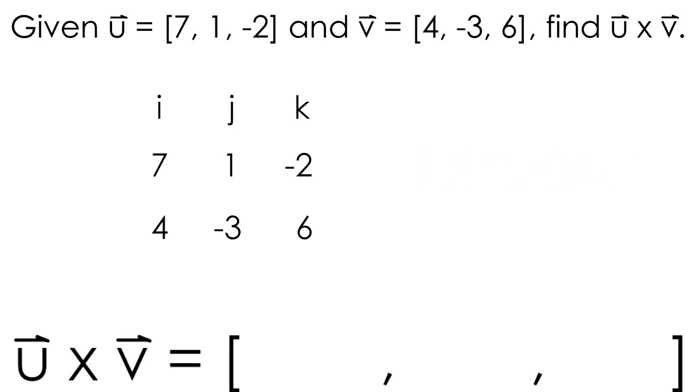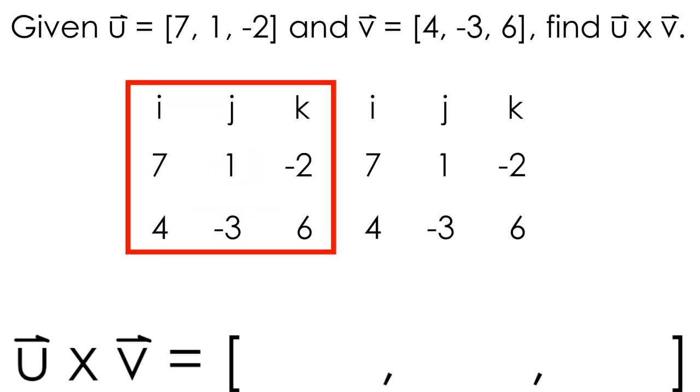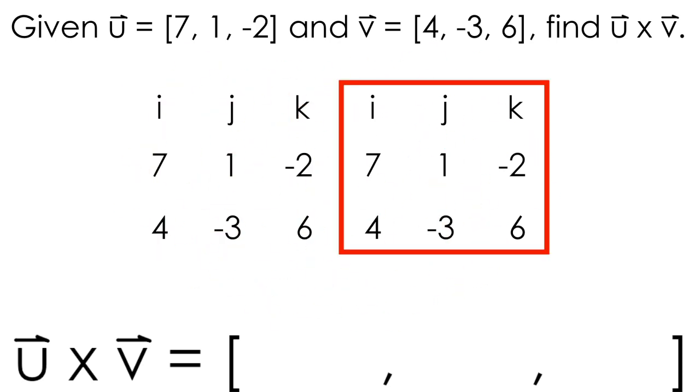Now this next part seems arbitrary and strange, so just hang in there. We're going to duplicate this little matrix and write it right next to the original one, so that we now have two copies of the original list of values.